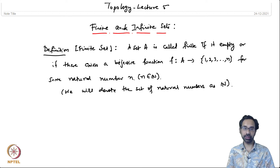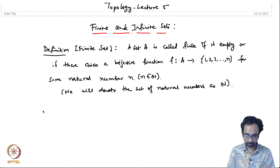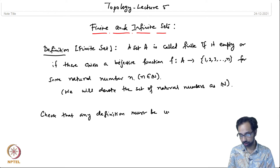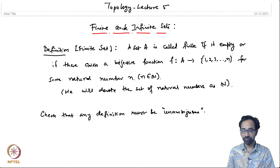This is a definition, but in mathematics whenever you see a definition you have to check that it is unambiguous. Any definition must be unambiguous — meaning it cannot have two meanings at once.